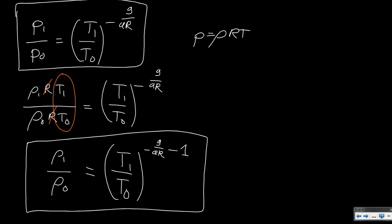There is however one problem: some layers have a lapse rate equal to zero. These equations only work if the lapse rate is not equal to zero — meaning there is a temperature gradient. If the lapse rate is zero, we have an isothermal layer with constant temperature, and using these equations would require dividing by zero, which is not allowed. So we need an additional set of equations for isothermal layers.